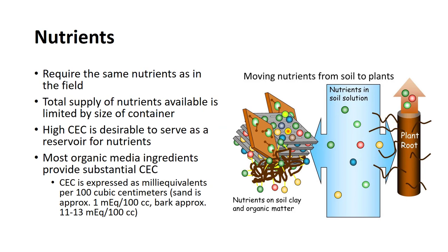Plants produced in containers require the same essential nutrient elements as plants produced in field culture. The total supply of minerals available for plant growth is limited by the size of the container. This makes it desirable for a container production medium to have a relatively high cation exchange capacity to serve as a reservoir for nutrient elements. Most, but not all, of the organic media ingredients provide substantial CEC. CEC is expressed as milliequivalents per 100 cubic centimeters.